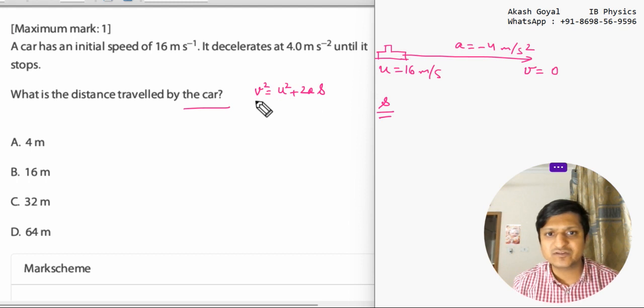So final velocity v is zero square equals to u square is 16 square plus 2 a is the acceleration that is minus 4 and that is s.